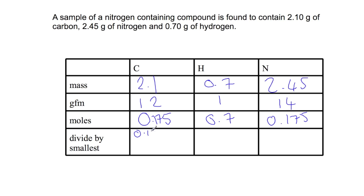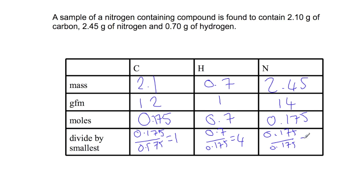So if we divide by the smallest, we have 0.175 divided by 0.175 to give 1, and 0.7 divided by 0.175 to give 4. The empirical formulae will then be CH4N. This is the simplest ratio, and the actual molecular formulae may be any multiple of this empirical formulae.